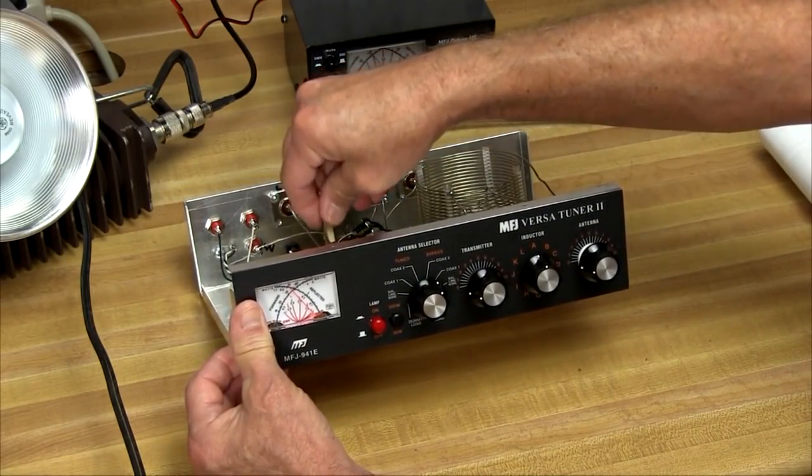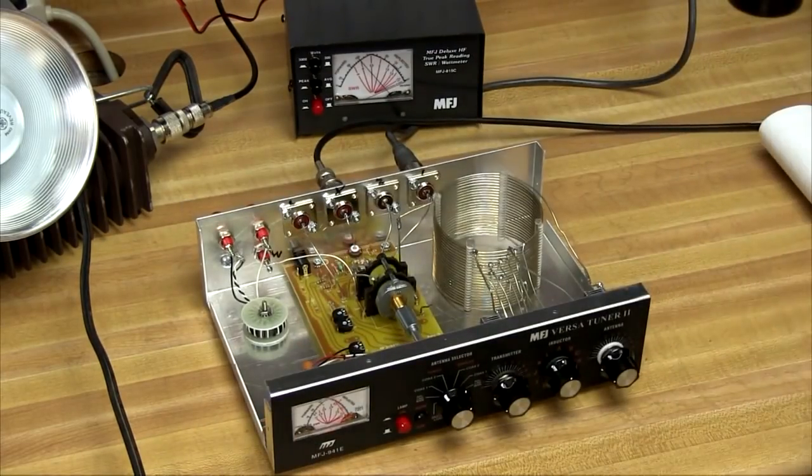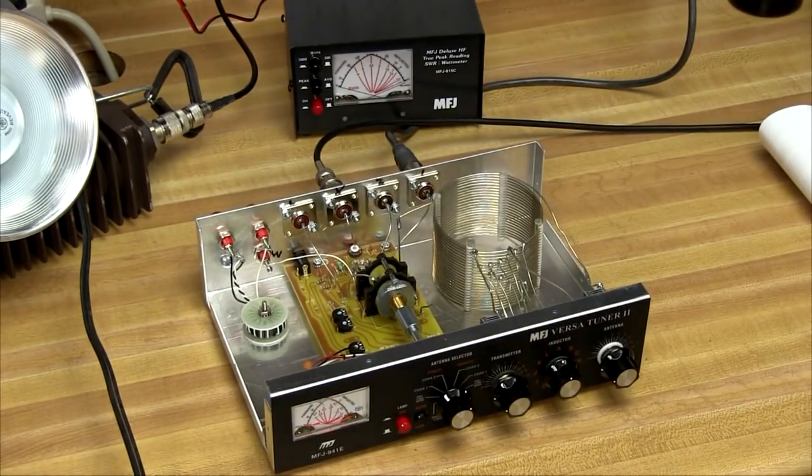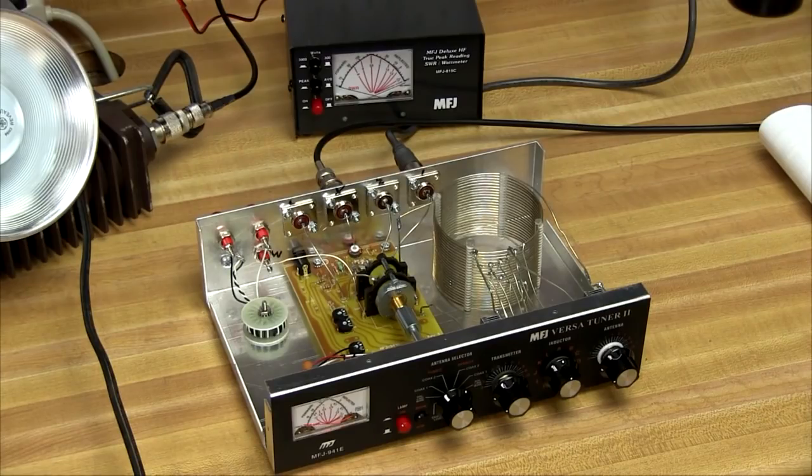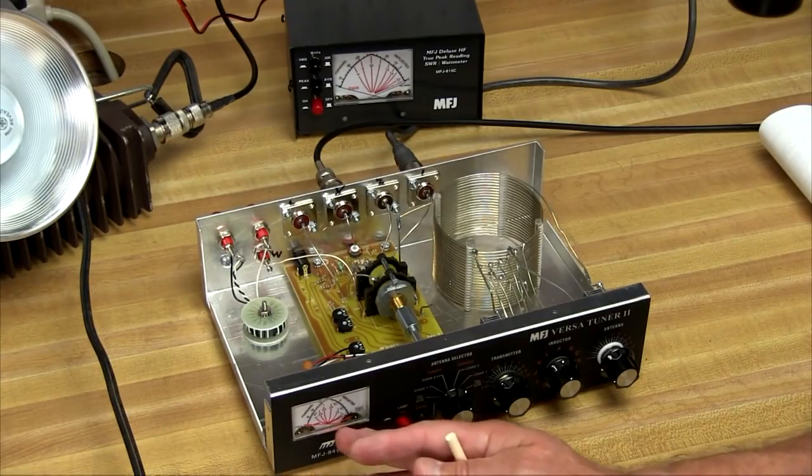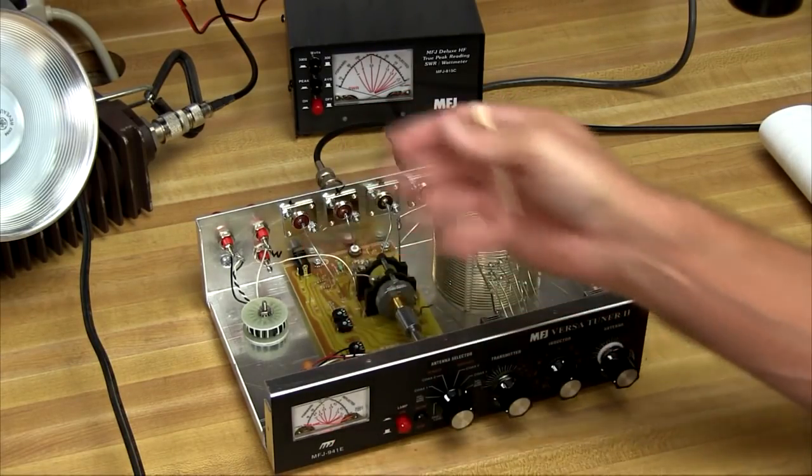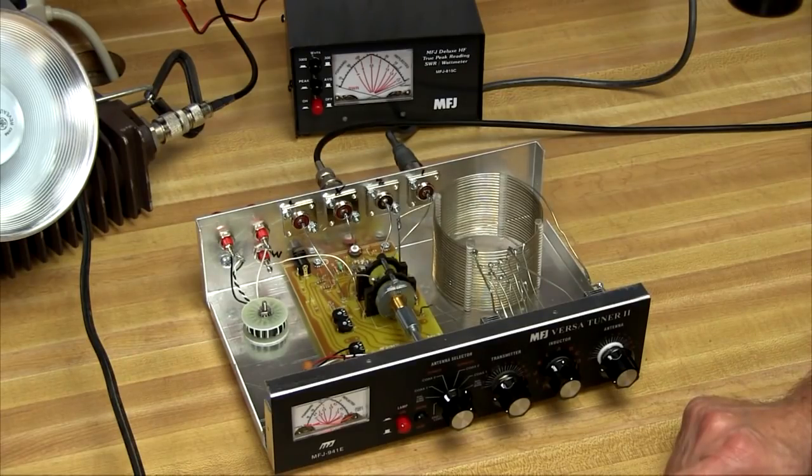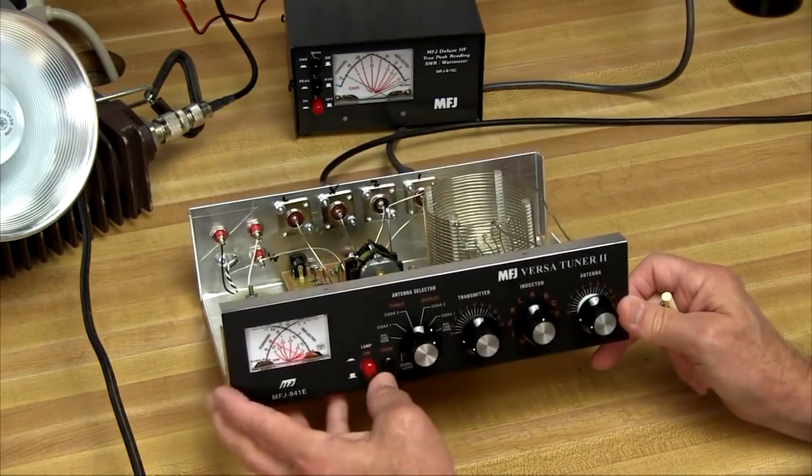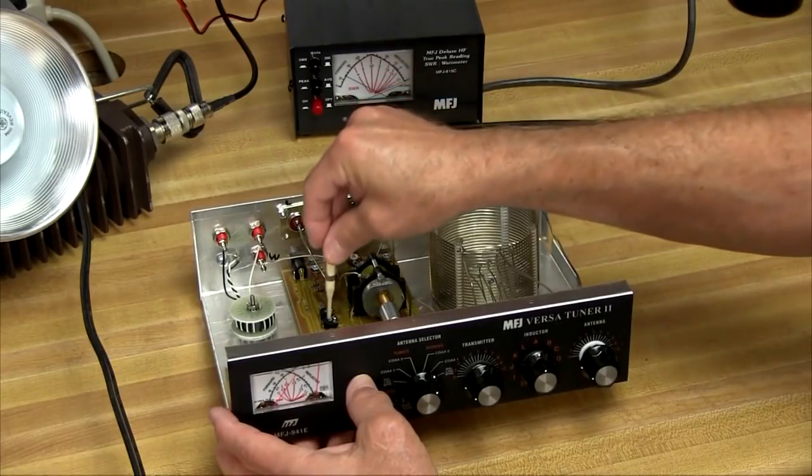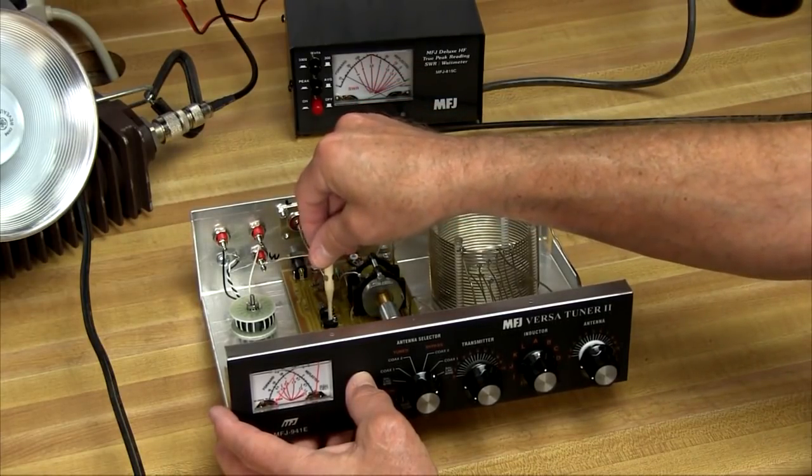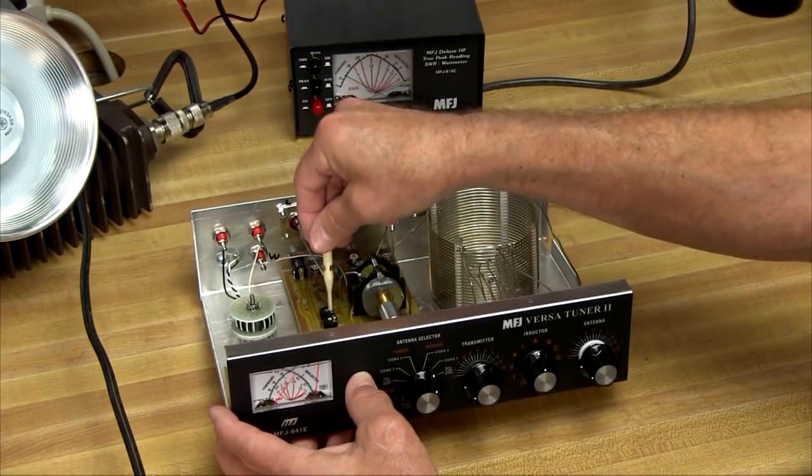So now we'll set it for 100 watts. We want to be careful when we're doing this that we don't leave our rig keyed up too long—they're not made for continuous duty like that, so kind of take it easy on the rig. We've got the first setting done there, and we've nulled out the capacitor as well. Now, we need to reduce the power of the transmitter down to 20 watts. We'll change our range switch here to the 30-watt scale, and it's pegged out as well. So we'll adjust R7 until we've got a 20-watt reading.